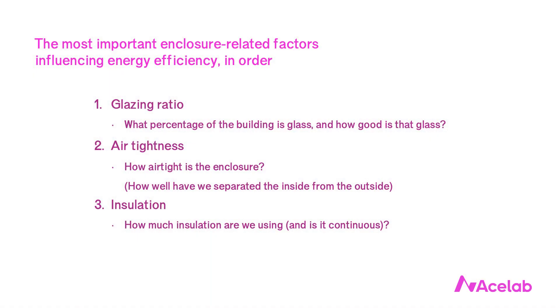To put all of this in the larger context of energy efficient design, the top three enclosure-related factors that influence how energy efficient a building will be are: 1) glazing ratio — what percentage of the building is glass and how good is that glass; 2) air tightness — how well have we separated the inside from the outside; and 3) insulation — how much insulation are we using and is it continuous. Both air tightness and insulation are really important and all the effort we put into designing these into our buildings is well worth it. But investing in careful design and good glass is even more important, and it makes our other efforts at air sealing and insulating even more successful.